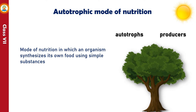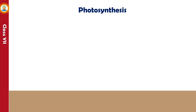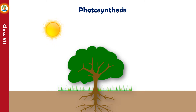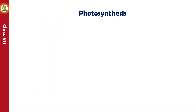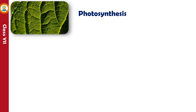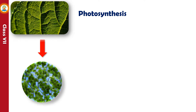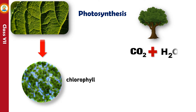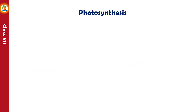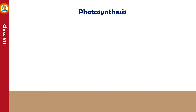The process by which plants prepare their own food is called photosynthesis. It is the process by which plants produce glucose by utilizing carbon dioxide, water and sunlight. The leaves of plants contain a green pigment called chlorophyll. This pigment imparts green color to the plants and traps the solar energy.